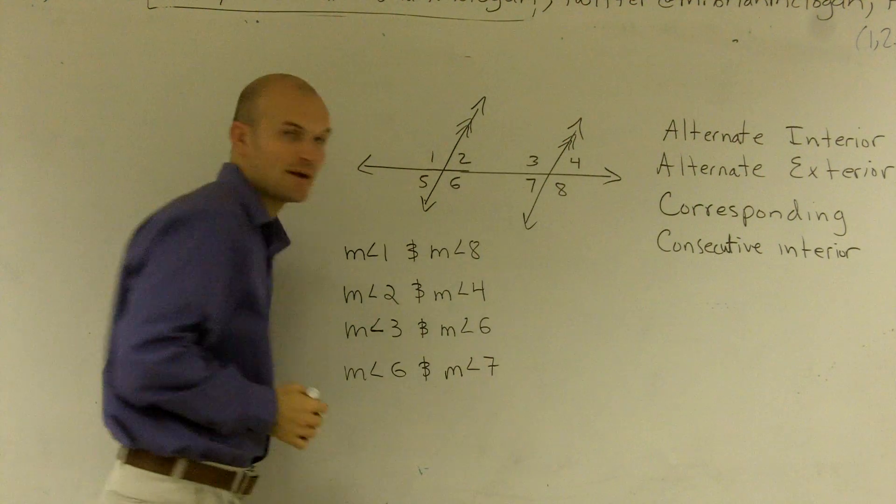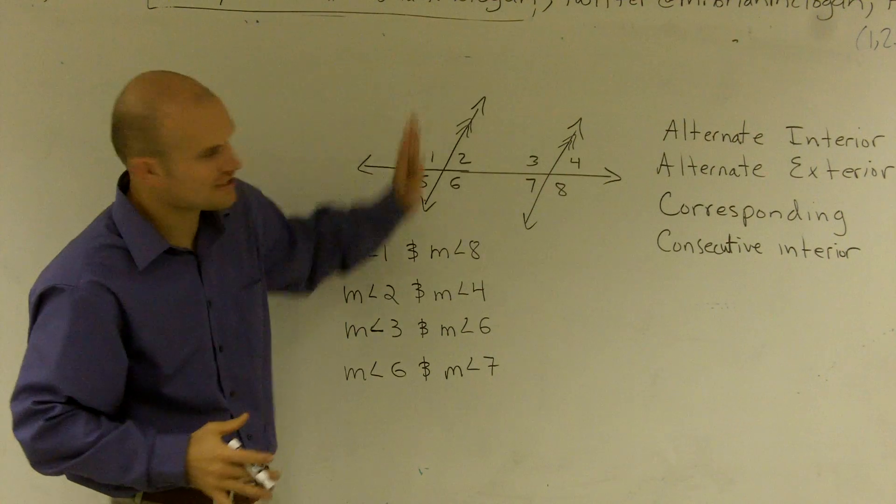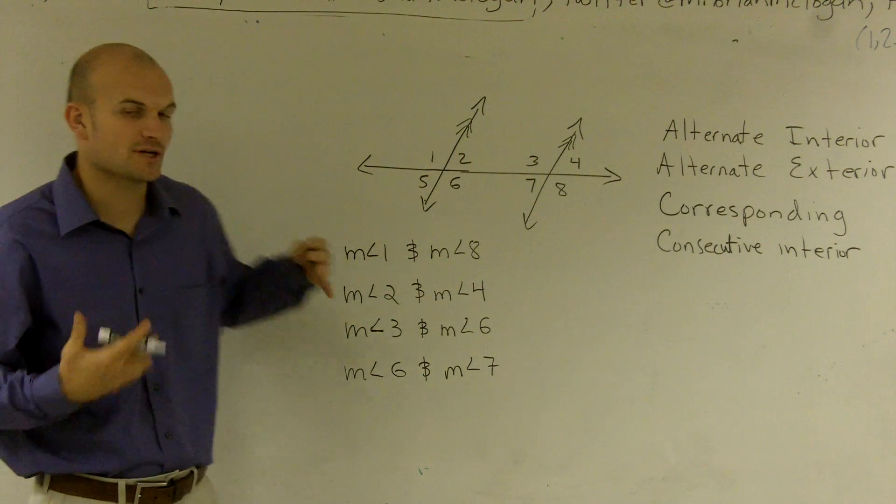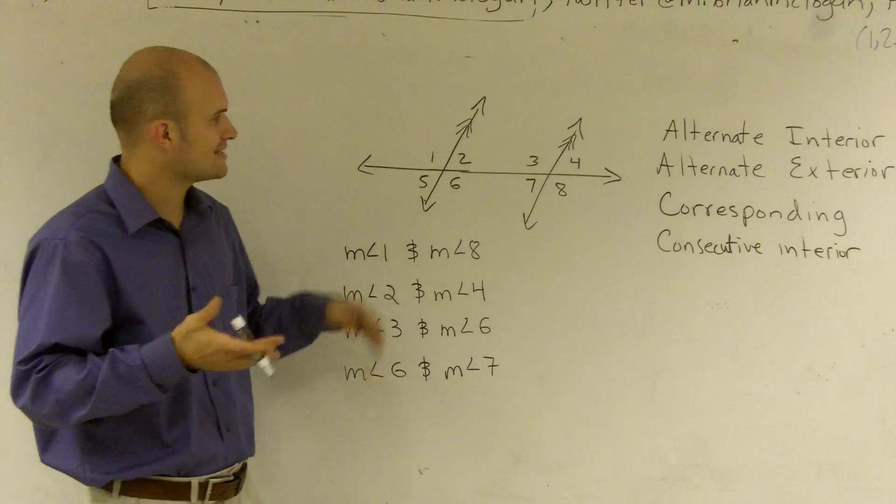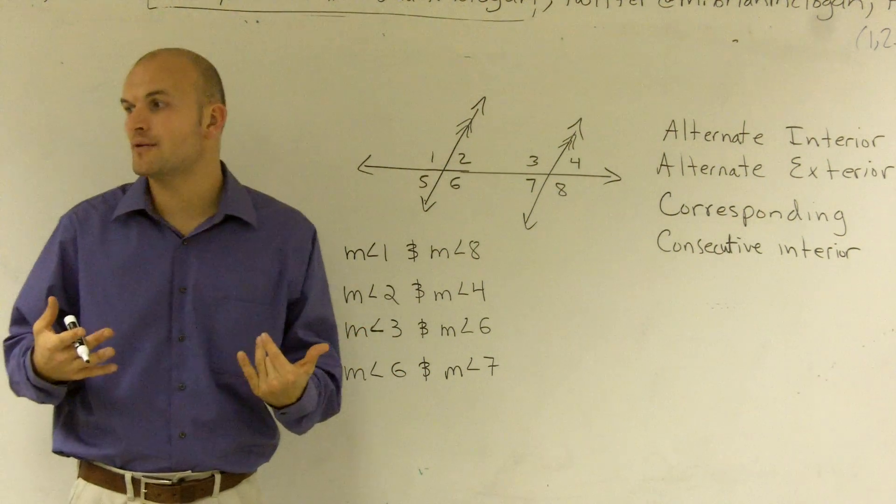I'll denote them as parallel lines by putting these double arrows. So these two lines are never going to cross. And then we also have a transversal. And what a transversal is, it's a line that's going to intersect two other lines. And normally, we're going to be using them when they're parallel.